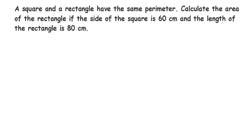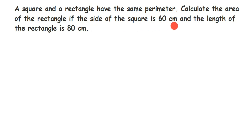Here's a question: a square and rectangle have the same perimeter. Calculate the area of the rectangle if the side of the square is 60 centimeters and the length of the rectangle is 80 centimeters.